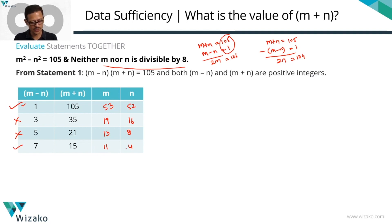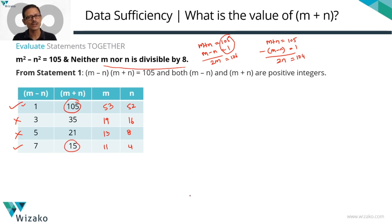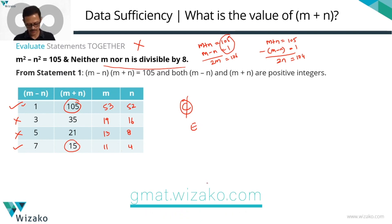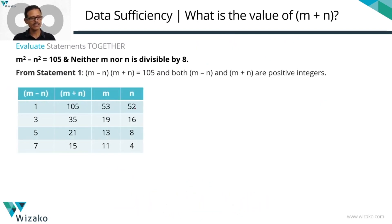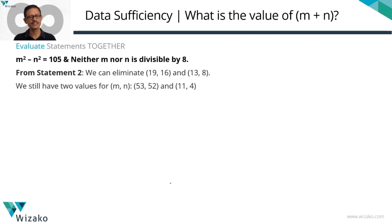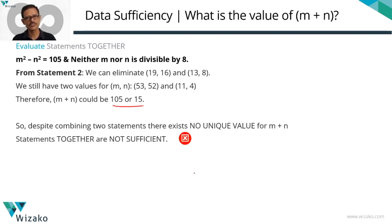For case 4: m plus n = 15 and m minus n = 7. Adding gives 15 plus 7 = 22 divided by 2, so m = 11. Subtracting gives 15 minus 7 = 8 divided by 2, so n = 4. Neither 11 nor 4 is divisible by 8, so this also satisfies all conditions. We now have two sets of m and n satisfying all conditions: (53, 52) giving m plus n = 105, and (11, 4) giving m plus n = 15. Despite combining the two statements, we do not have a unique answer for m plus n — the statements together are not sufficient. Eliminate answer option C; the answer is E.